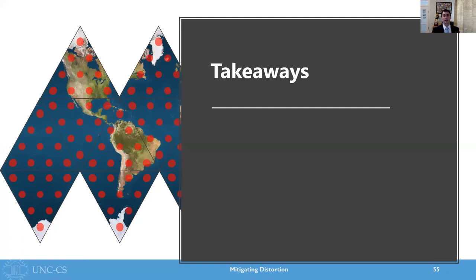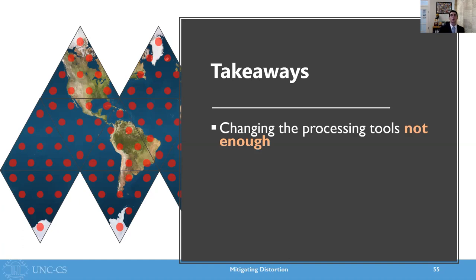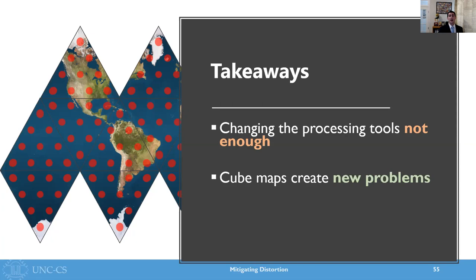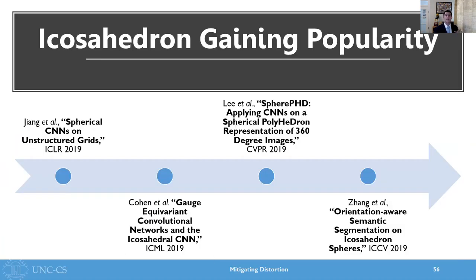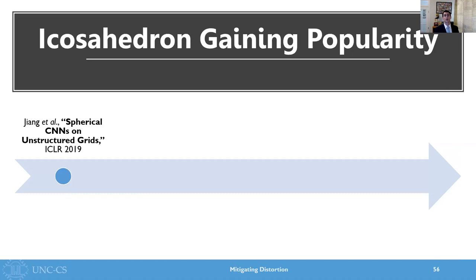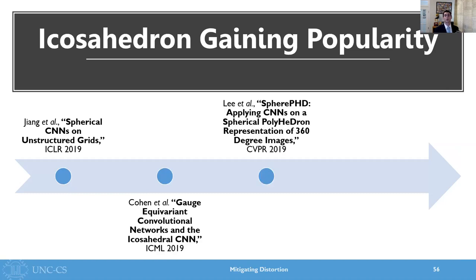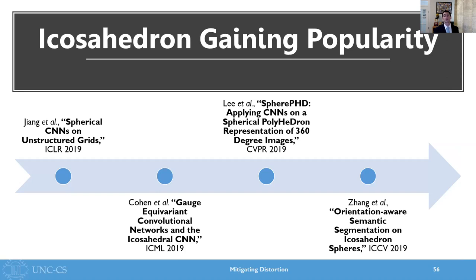So let's pause here for a second and look at some high level takeaways from these experiments. First, changing the image processing tools does not go far enough to address distortion — we need to also consider changing the representation. Next, cube maps, while having a lower distortion characteristic than equirectangular images, create new issues for convolution, so they're not a useful representation for our purposes either. However, the icosahedron works, and in fact it works quite well. In fact, the icosahedron has been gaining popularity among concurrent work on this topic. Papers touting its benefits were published at four of the major vision and machine learning conferences this past year.